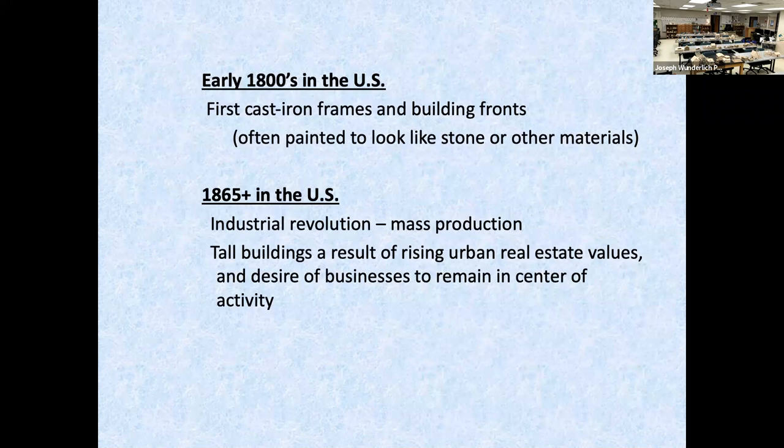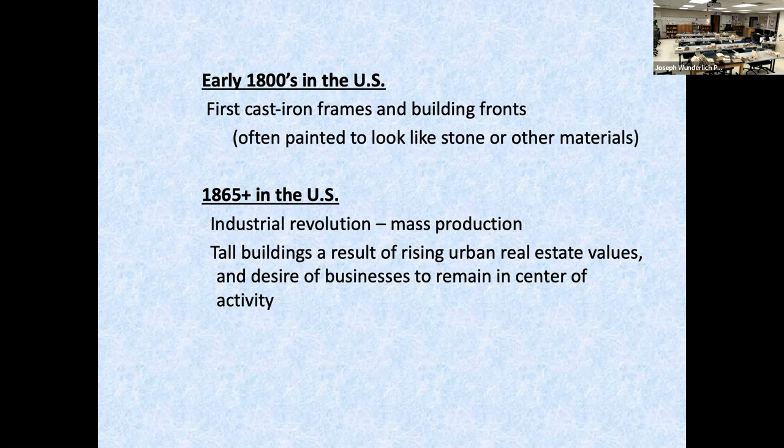In the early 1800s, the United States had cast iron frames and building fronts, often painted to look like stone or other materials. After 1865 and the Civil War, the United States underwent the Industrial Revolution — actually the second Industrial Revolution — with mass production, resulting in tall buildings.